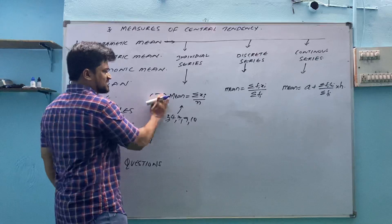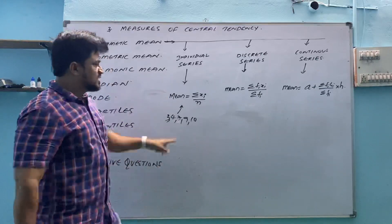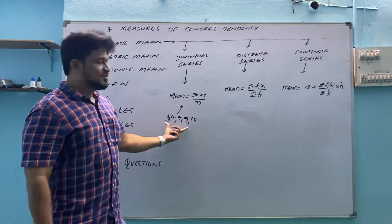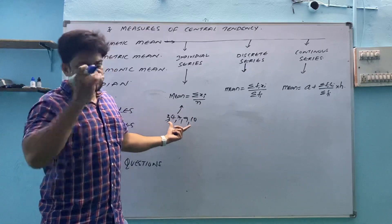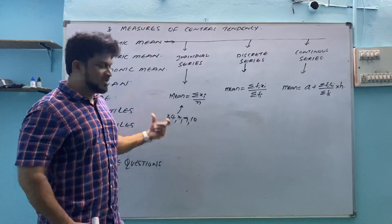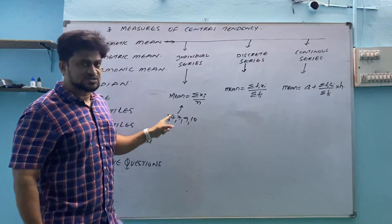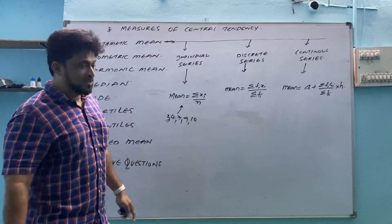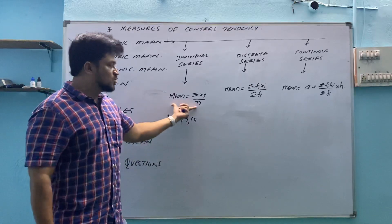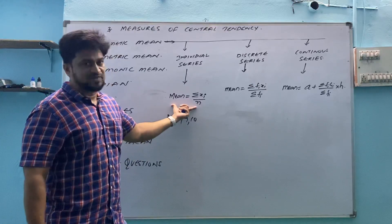But we basically will not use any symbol. We will write mean equals to sigma xi by n. Again, this formula we will use for particular questions which don't have tables we can see, or row number and values are given, or names and values are given, alphabet and values are given. For such type of questions, at the time of question I will explain you why this is considered to be individual series.